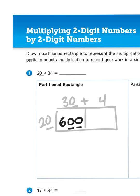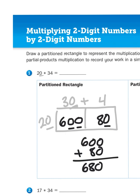And then 20 times 4 is going to give me 80, or 2 tens times 4 is going to give me 8 tens. And then when I go and add those two products together, 600 plus 80 is going to give you 680. Pretty straightforward, right?